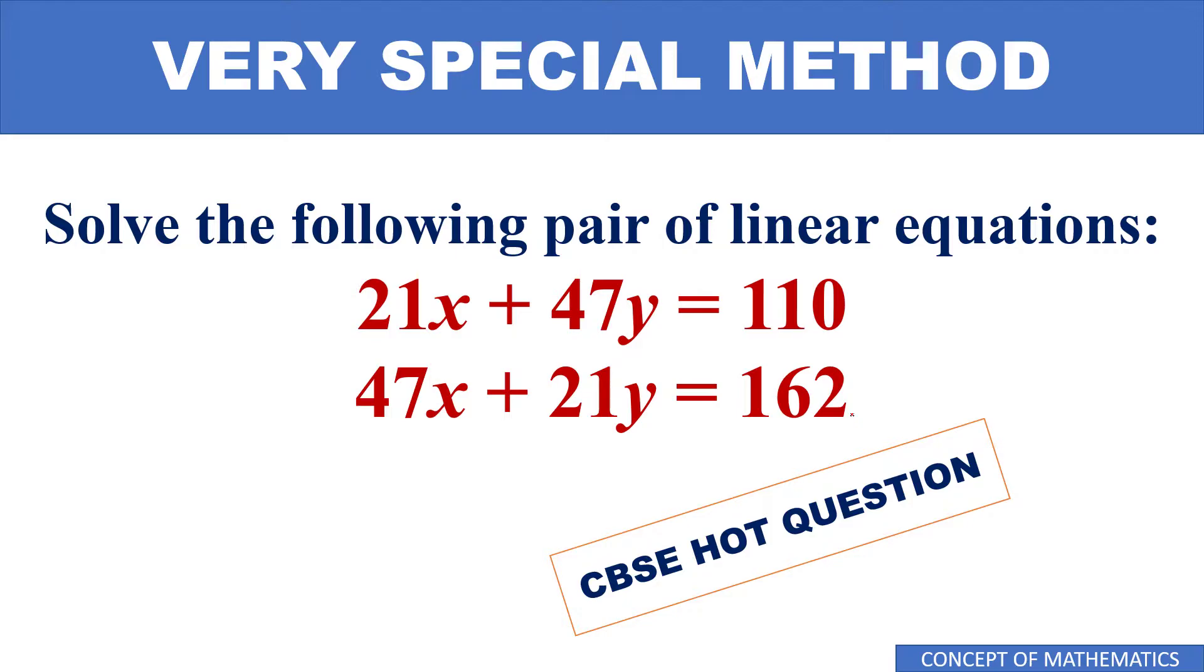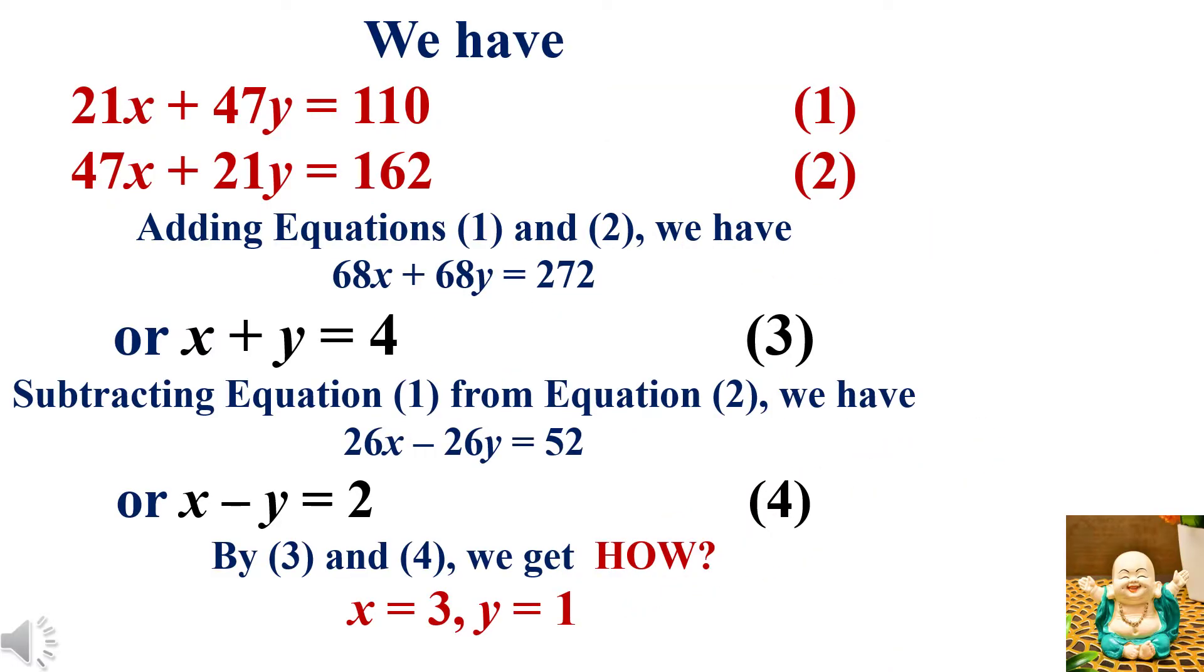Now let's start to solve these two linear equations in two variables. We have 21x plus 47y equals 110 as equation number 1, and 47x plus 21y equals 162 as equation number 2.